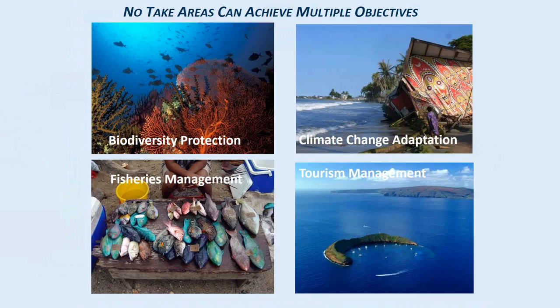No-take areas can be really powerful tools for achieving these objectives, but the problem is that they frequently aren't — because they're either not designed in a way that takes the ecology of the key species into account, or they're not effectively managed or enforced. Today I'm going to focus on how you can design these areas so they will work ecologically. One of the frequent mistakes I see is that decisions are driven so heavily by socioeconomic considerations that the areas just aren't designed in a way that will actually work to achieve the objectives.